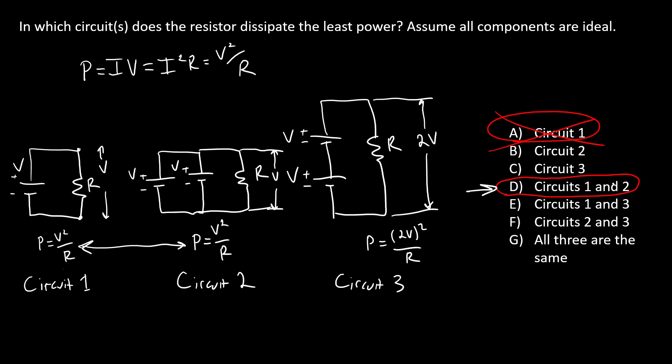Circuits one and two dissipate the least power. Circuit three dissipates more power because adding the batteries in series does actually increase the voltage over the resistor. So you might ask, well, wait a minute, does adding more batteries change anything? That's got to change something.